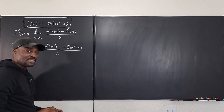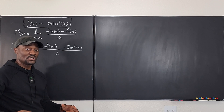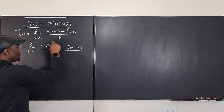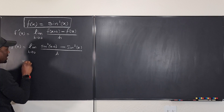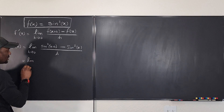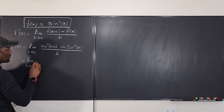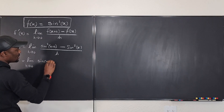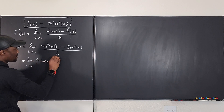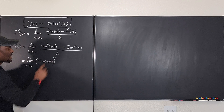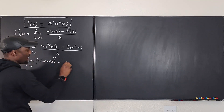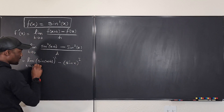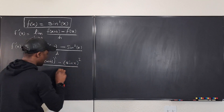Initially this doesn't look promising at all because you don't know what kind of manipulations you want to do. What I'm going to do is rewrite this expression as the limit as h goes to 0 of sine of (x plus h), all squared, minus sine x all squared, divided by h.